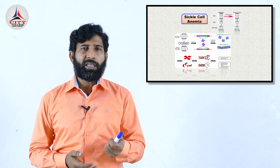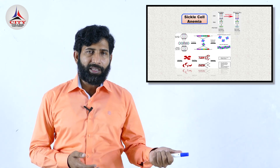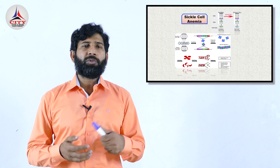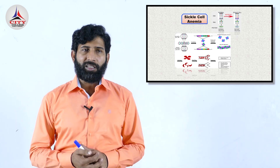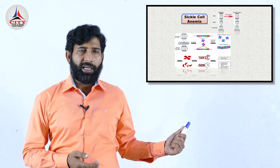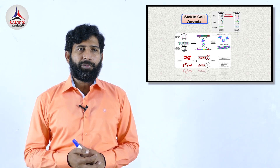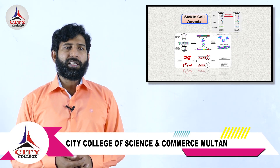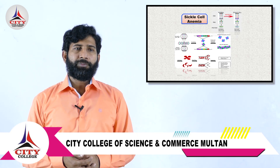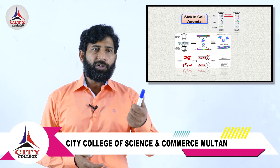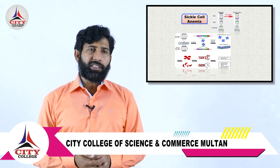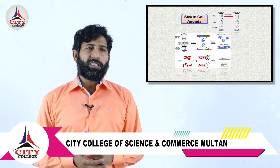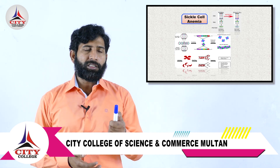Because the complementary codon changed, instead of specifying glutamic acid, the new codon now specifies valine. This way, in hemoglobin, valine replaces glutamic acid. The protein structure then starts to change. As seen in the diagram, in the beta globulin, the HBB gene exists. The mutated beta gene carries GTG instead of GAG.